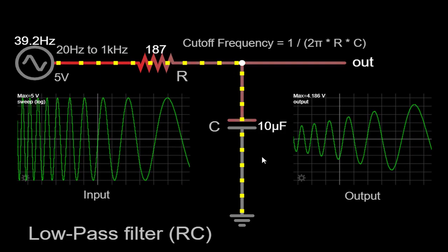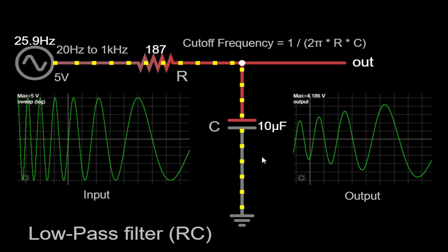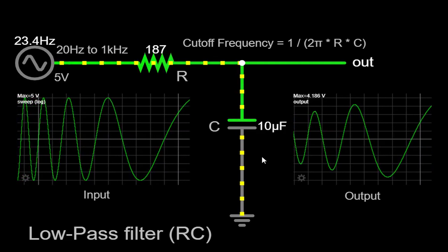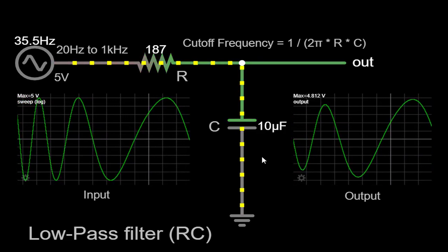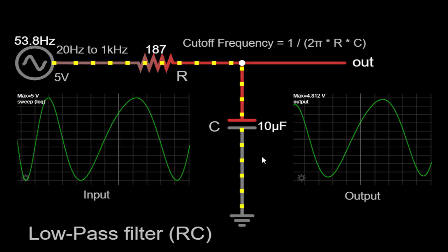Specifically, we'll be utilizing the RC circuit as a low-pass filter, which is a type of filter that permits low-frequency signals to pass through while attenuating higher-frequency signals.